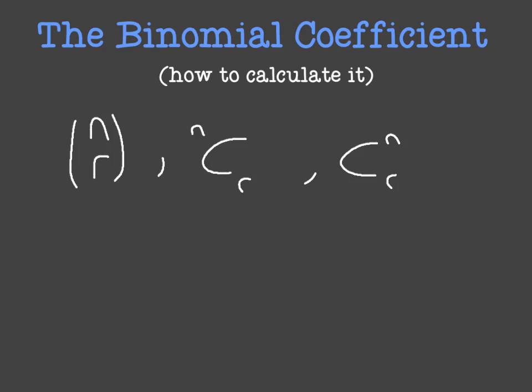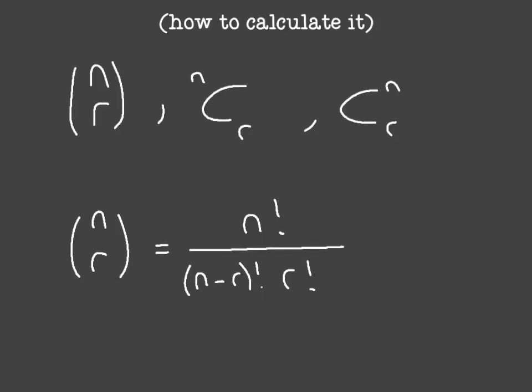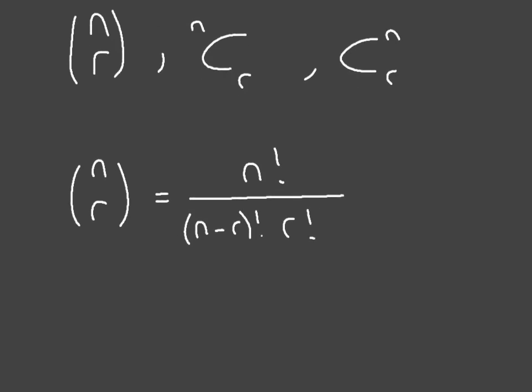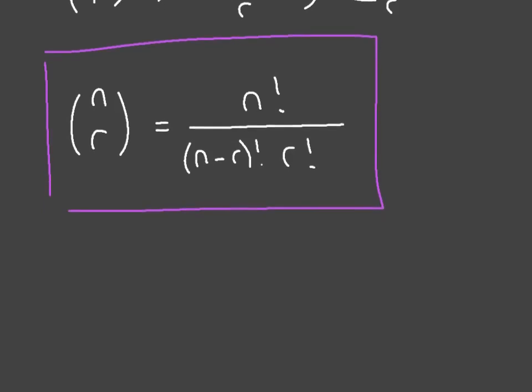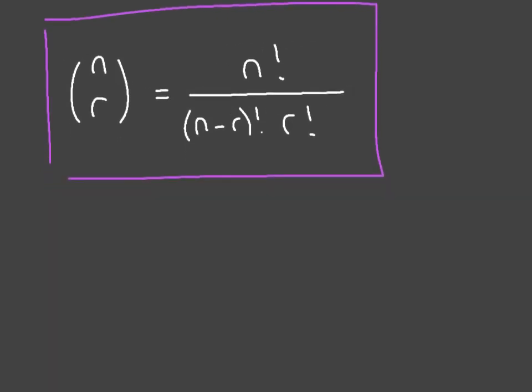So let's go ahead and see the formula for calculating the binomial coefficient. The formula is n factorial over n minus r factorial times r factorial. I'll just box that there. This is a formula you want to make sure you know. Now this looks a lot more complicated than it actually is, so let's illustrate how to actually use this with an example.